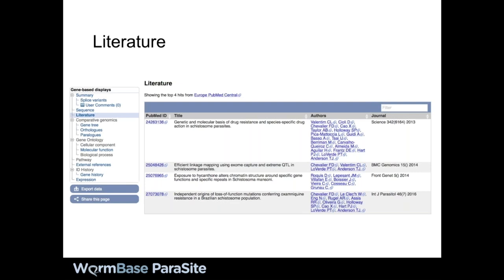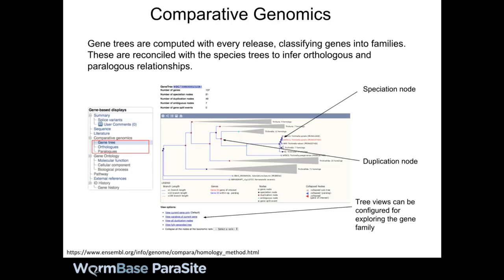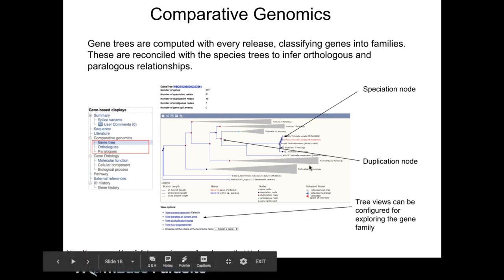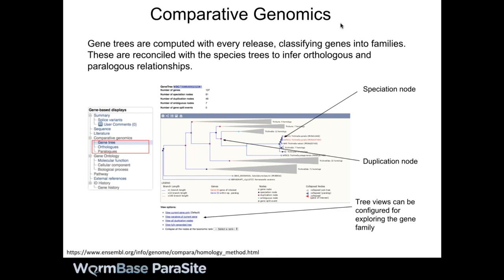Where WormBase Parasite really shines is when different bits of data get connected together — for example, what is this gene equivalent to in a neighboring species of Schistosoma? You can also access the comparative genomics data using the menu on the left-hand side of the gene page. We compute gene trees with every release, classifying genes into families. We show gene trees — this is an example from Trichuris and Trichinella, which has expanded in those genera.